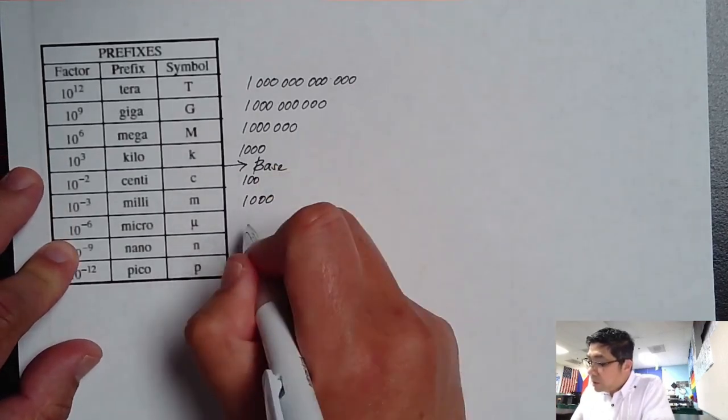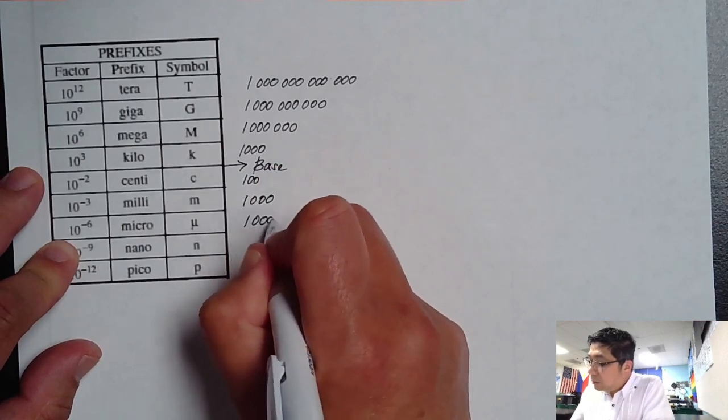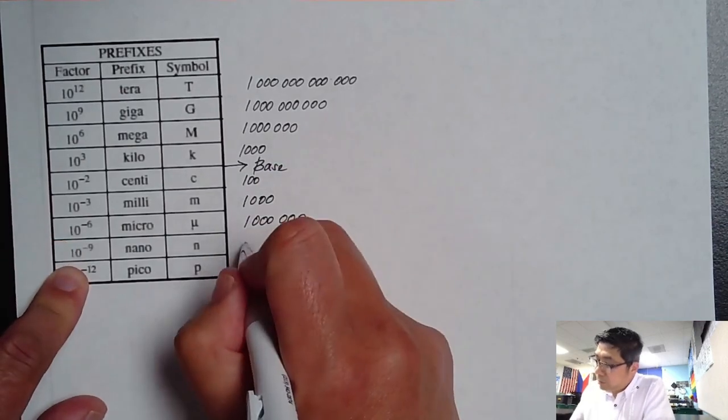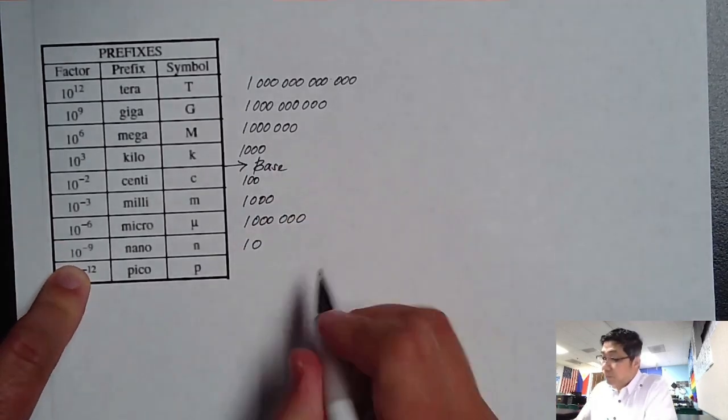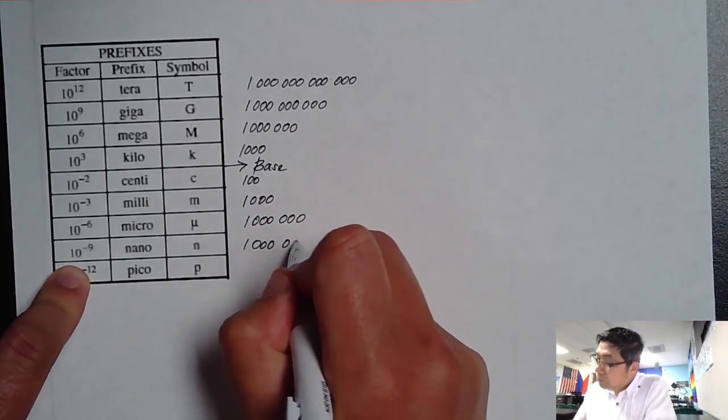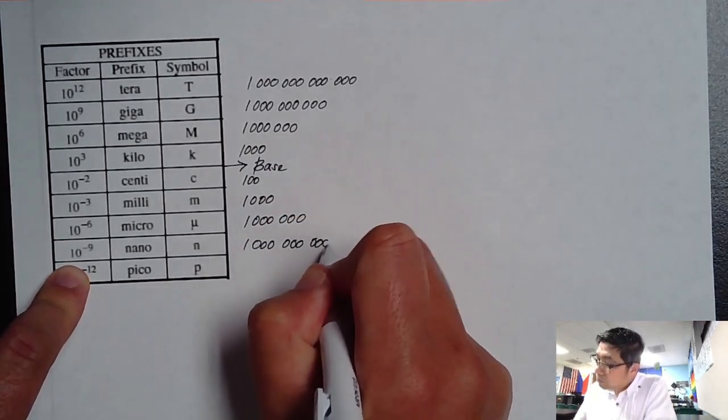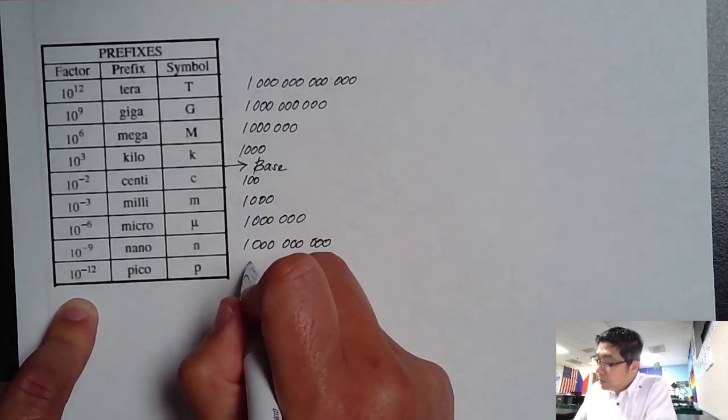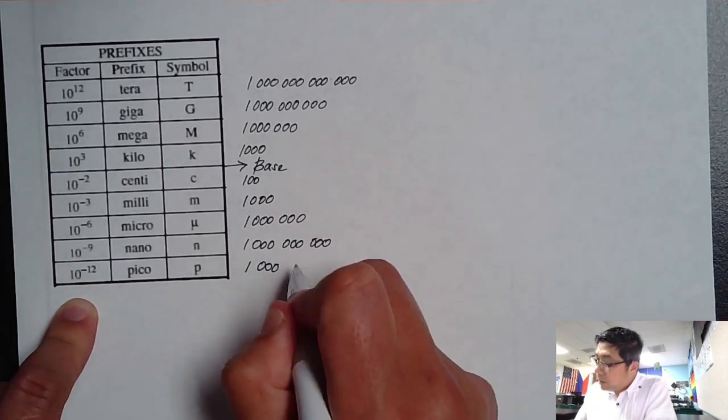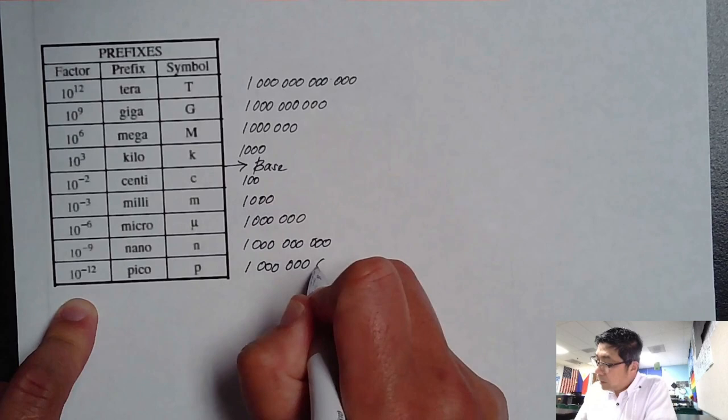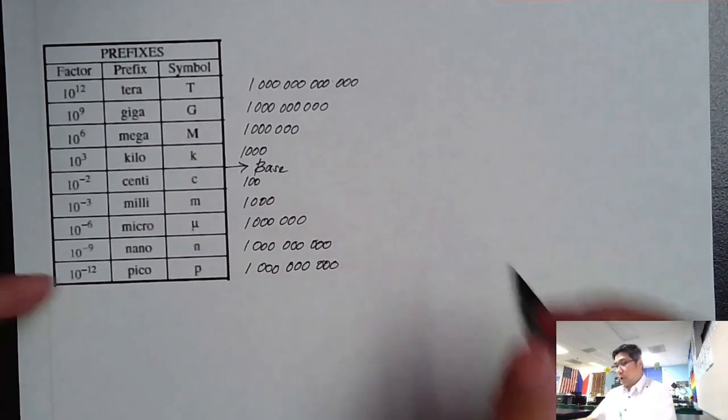Micro, which is a million. Nano, which is a billion. And then Pico, which is a trillion. A trillion, not a trillion, a trillion.